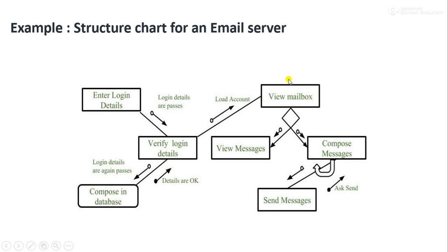Based upon the control signal, another module is called — the View Mailbox module. This module calls two sub-modules based on a condition represented by a diamond. If the user wants to view a message, one module is called; if the user wants to compose a message, another module is called. The Compose Message module can call itself multiple times, which we represent using a loop symbol.